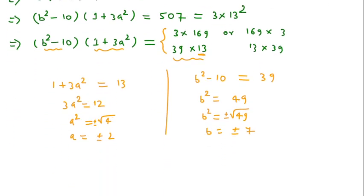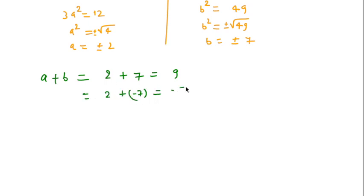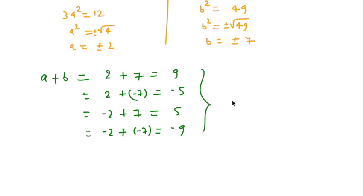Now we find a + b. If a = 2 and b = 7, the answer is 9. If a = 2 and b = −7, the answer is −5. If a = −2 and b = 7, the answer is 5. If a = −2 and b = −7, the answer is −9. These are all possible values of a + b. Thanks for watching — please like, share, and subscribe.